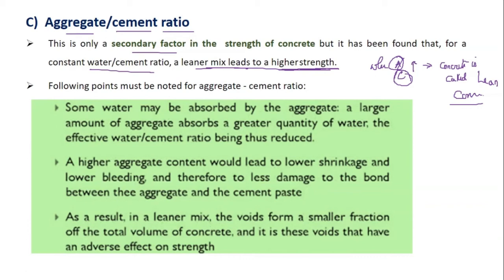When you add water, that water is absorbed by the aggregate. A larger amount of aggregates absorbs a greater quantity of water. Therefore, the effective water-by-cement ratio is reduced. When more aggregate is added, the aggregate absorbs the water that was added earlier, so the final water-by-cement ratio decreases.